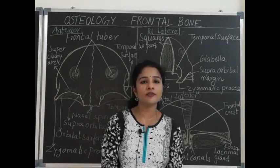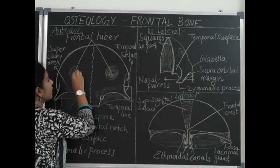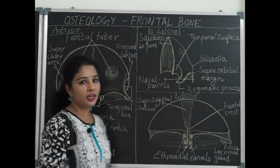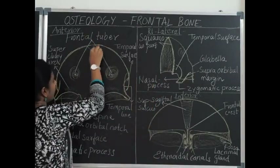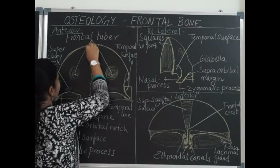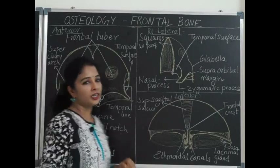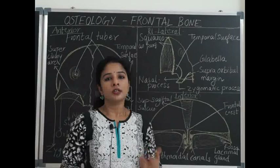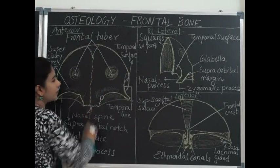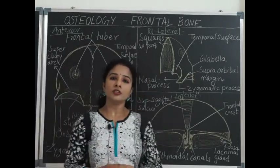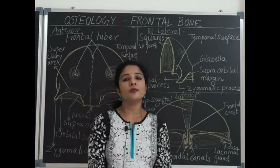The frontal bone gets ossified by two primary centers, which appear at the frontal protuberance during the 8th week of intrauterine life. They form a gap between the frontal bone and parietal bone just before birth, present as the anterior fontanelle, which closes one and a half years after birth. Initially the two frontal bones are separated by the metopic suture, which gets ossified usually by the 8th year after birth.